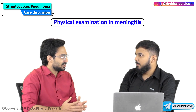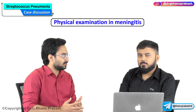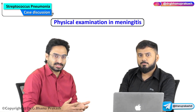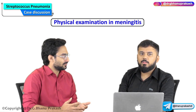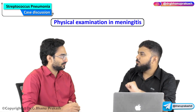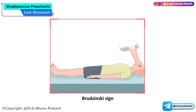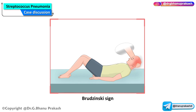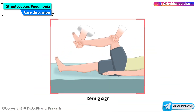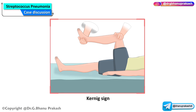In Streptococcus pneumoniae, what kind of physical examination findings do we see in meningitis? In meningitis, we will see three physical examinations. One is nuchal rigidity, second one is Brudzinski sign, and the third one is Kernig sign. Brudzinski sign is when patient is in supine position, we should flex the neck of the patient, and immediately the patient will flex his knees automatically. Kernig sign is when patient is in supine position, we have to extend his knees and flex the hip to 90 degrees, and automatically patient will feel pain and discomfort.